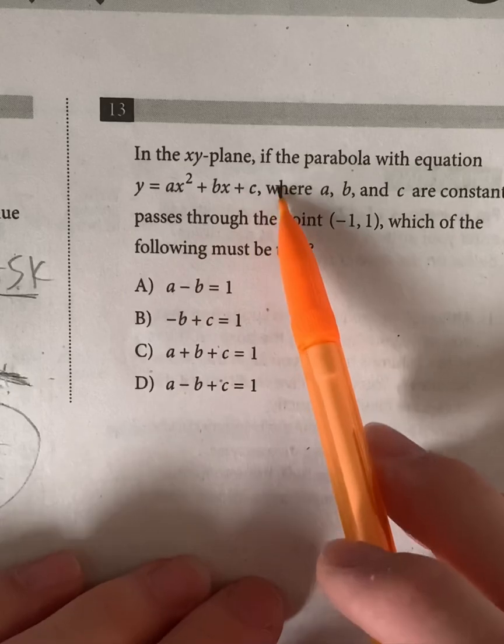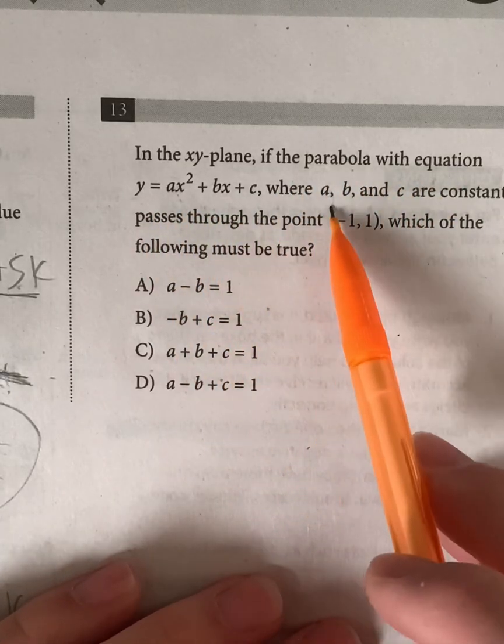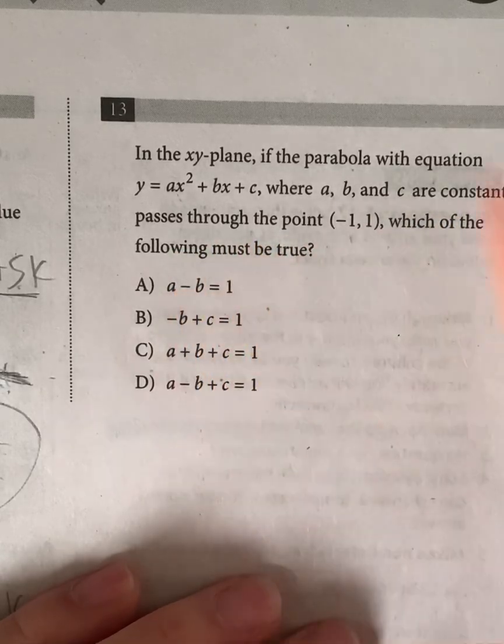So in the xy-plane, if the parabola with equation y is equal to ax squared plus bx plus c, where a, b, and c are constants, passes through the point negative 1, 1, which of the following must be true?